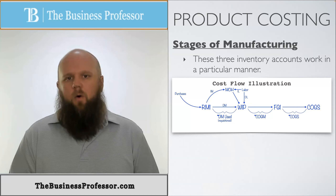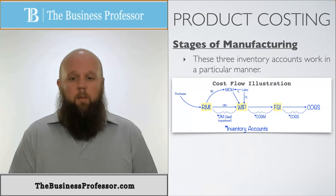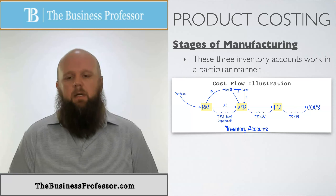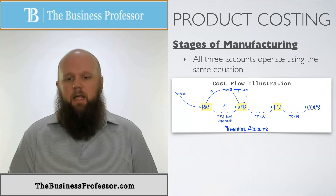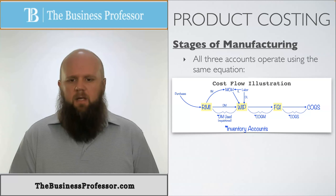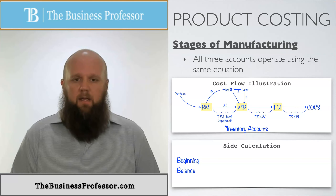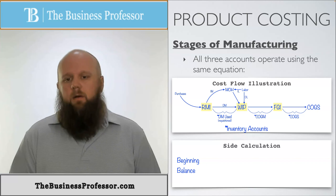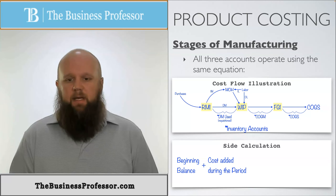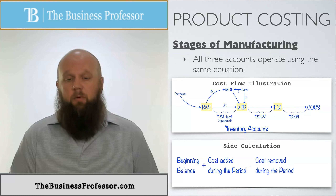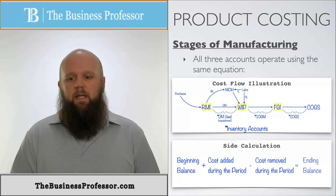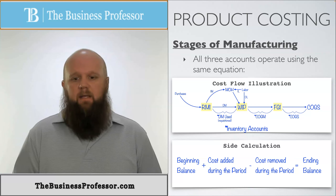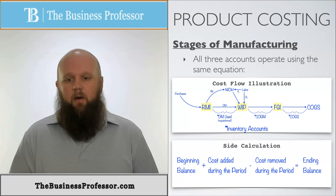Each of these inventory accounts has its own equation. Looking at each inventory account — raw materials inventory, work in process inventory, and finished goods inventory — the formula is: start with the beginning balance (what we started the period with), plus any additions (additional costs put in during the period), then subtract the cost removed during that period, and what's left is our ending balance.